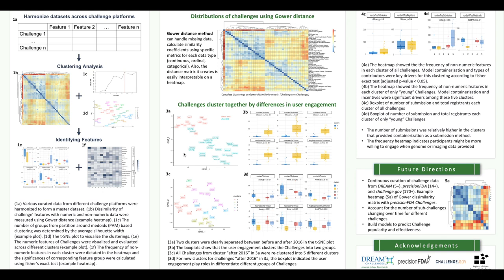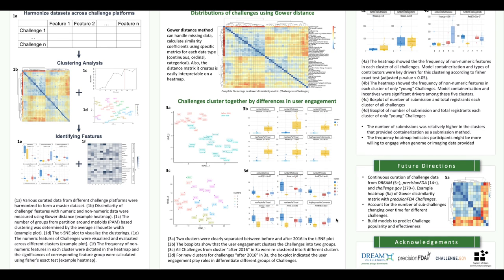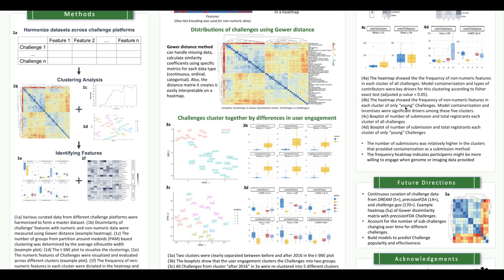User engagement data are data collected from discussion forums, where participants can ask questions and communicate with organizers. We realized the discussion forum was not well-developed or well-known until late 2016, which explains the two clear separation clusters. We also tried using only the challenges from cluster 2 in figure 3a and reclustered them into five new groups. The results show a better mix of years, but challenges with similar years still tend to group together. From figure 3d, we can still see differences in user engagement data even among young challenges after 2016. Therefore, user engagement data seems to play a key role in differentiating challenges.